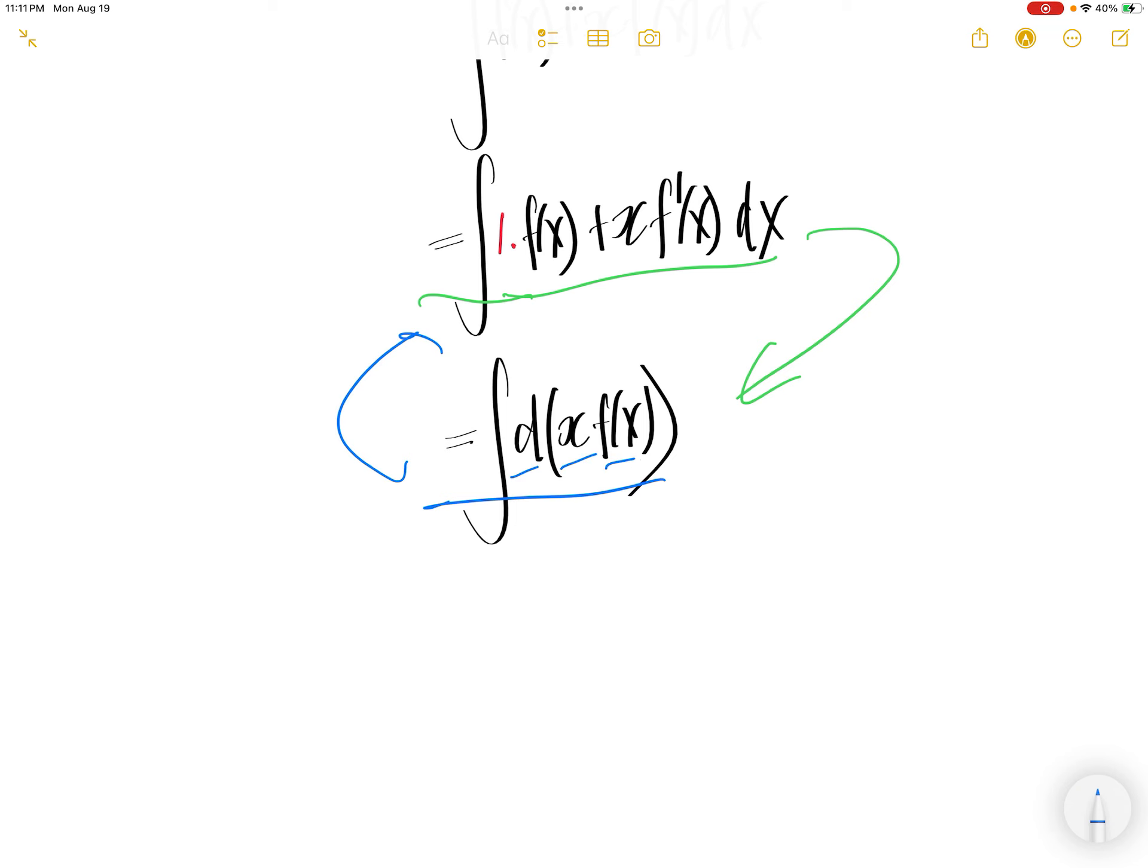Now notice when you want to get the derivative of a product of 2 functions, you apply the product rule. Product rule says that when you want to get the derivative of a product of 2 functions, the first function which is x, take the derivative of that which is 1 and then times the second function plus the first function times the derivative of second which is f prime of x.